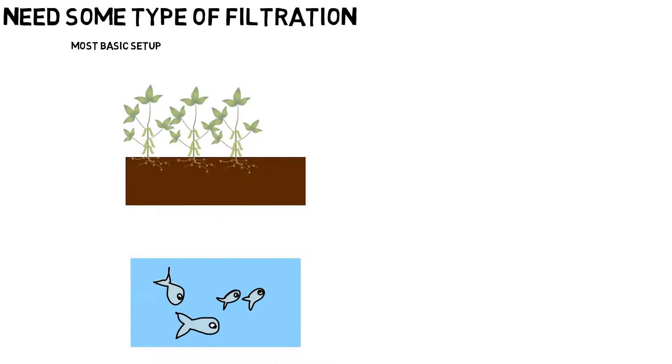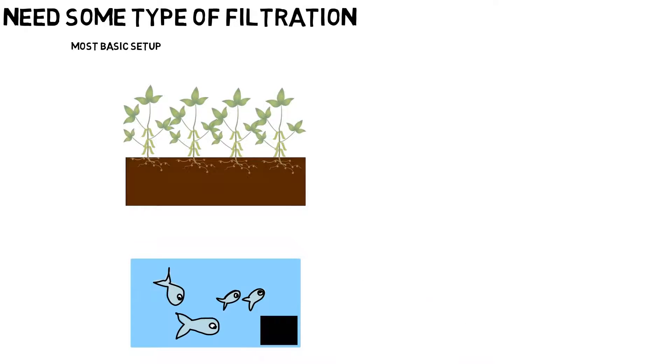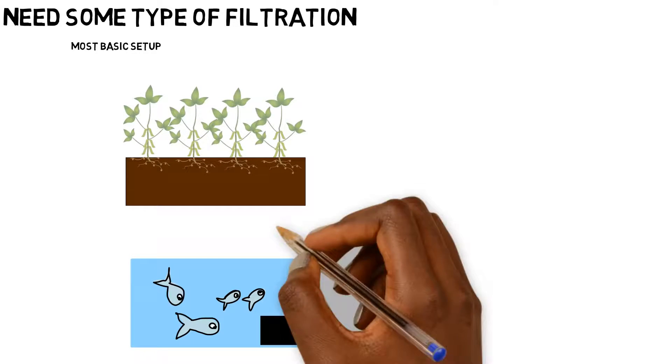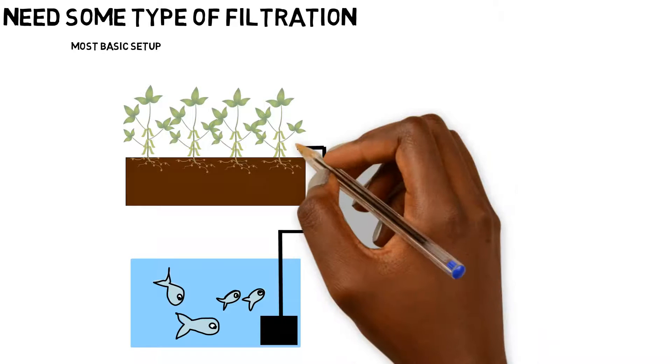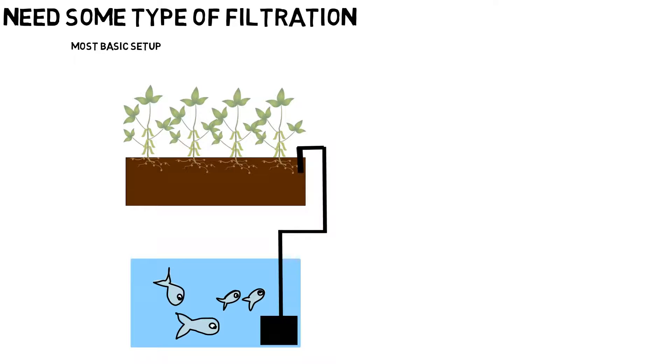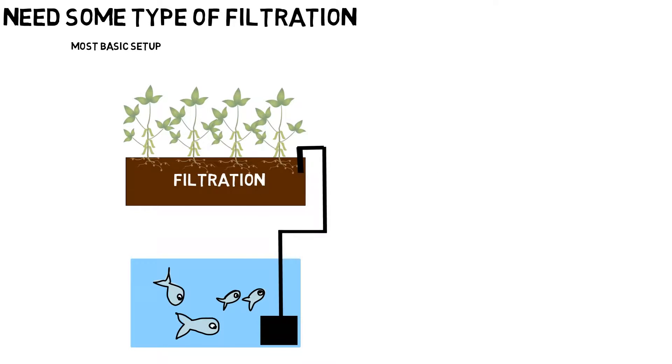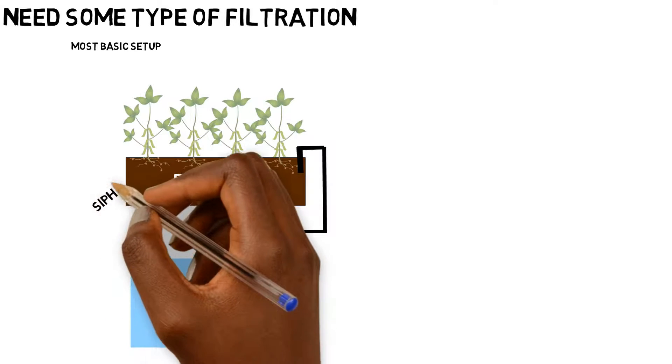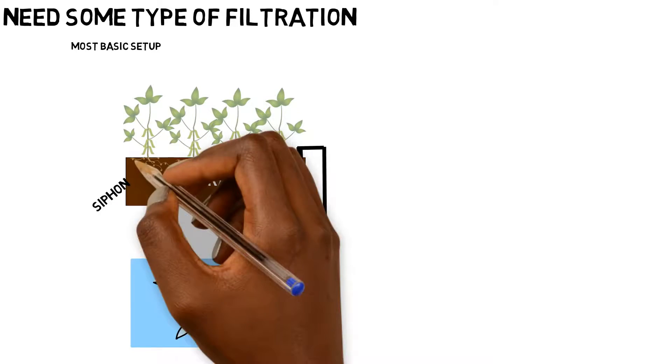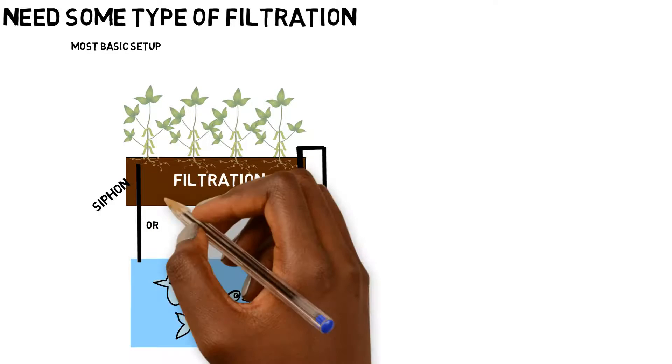And then at the top, you can have a media based system. You have your media inside of there and you can place your system or place your plants inside of this media bed and you can put your pump in the aquarium, run your plumbing up to the media bed, and there is going to act as a mechanical filter.